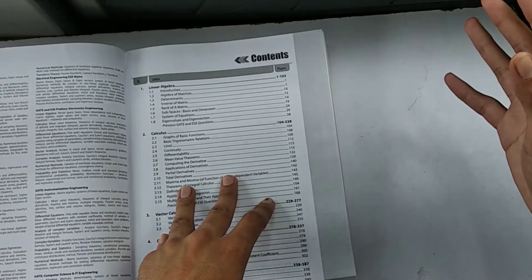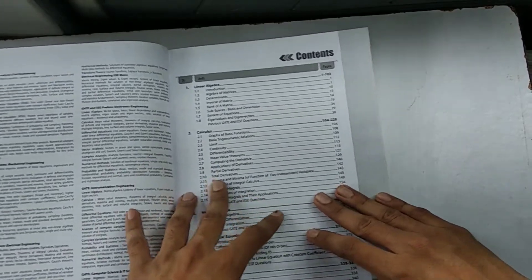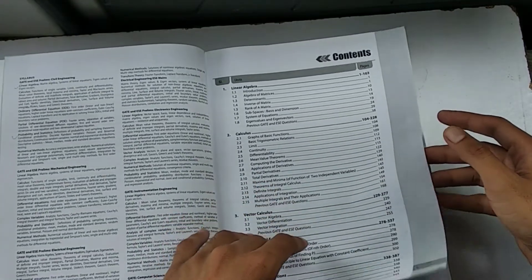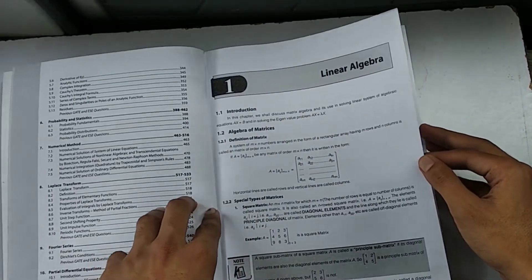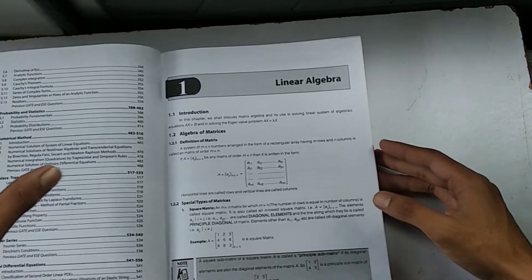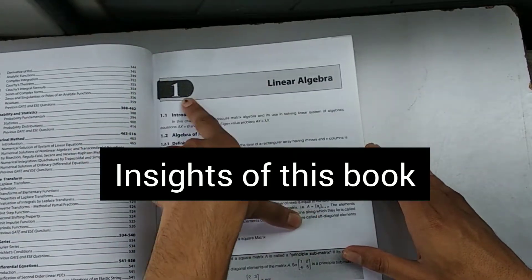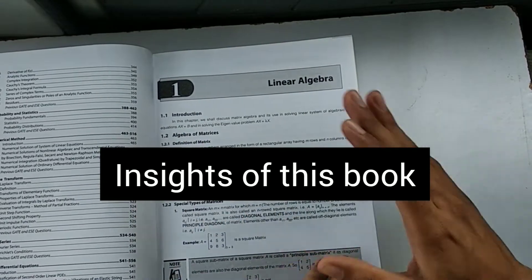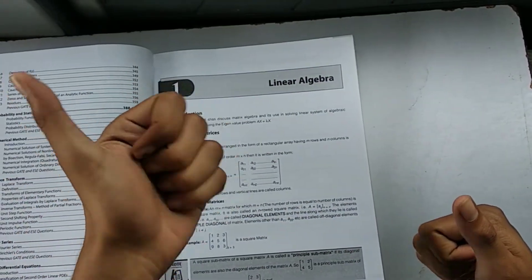For example, if you have a topic for Computer Science Engineering, you may not have the same topic or the same concepts of Engineering Mathematics for Civil or Mechanical. So here's how the book goes. First is the chapter name.